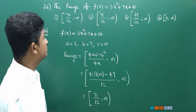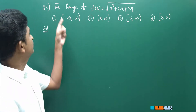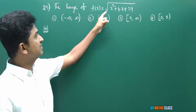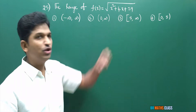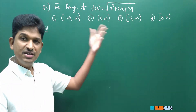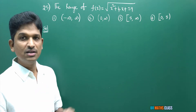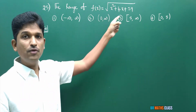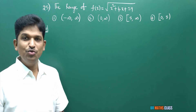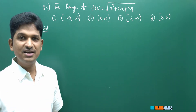So the range of this function is [71/12, infinity). The second option is the right option. Now observe question number 25: range of the function f of x equal to square root of x square plus 4x plus 29. The function is in the form of square root of AX square plus BX plus C. So how will we calculate the range of this function?